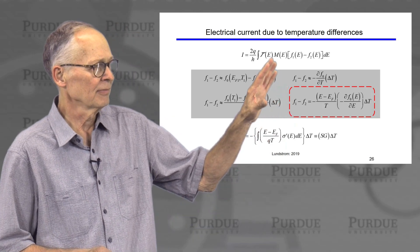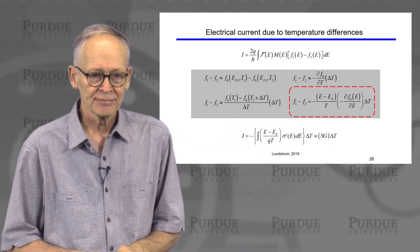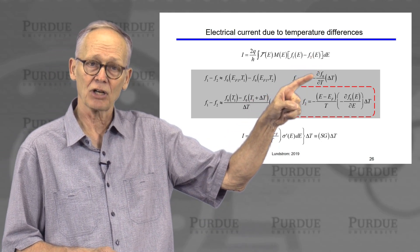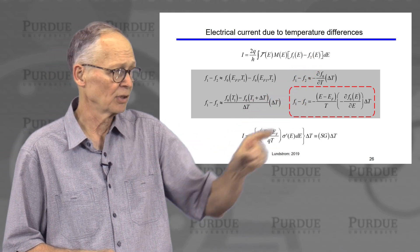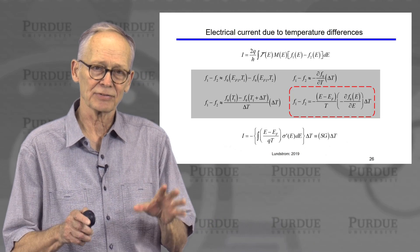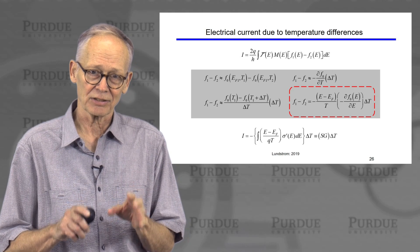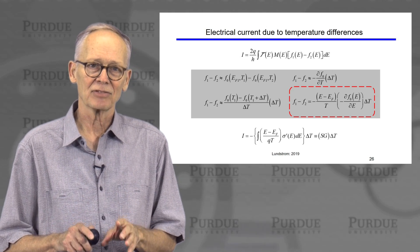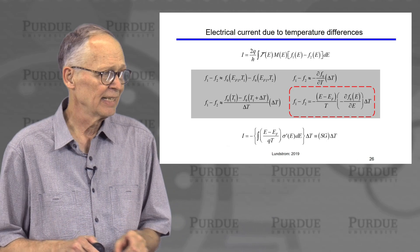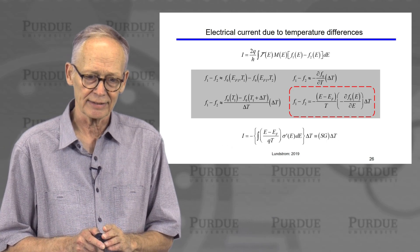We'll begin with the Landauer expression. In this case, the difference in Fermi functions that is causing the current to flow is not coming from a difference in Fermi levels in the two contacts. It's coming from a difference in temperature between the two contacts.